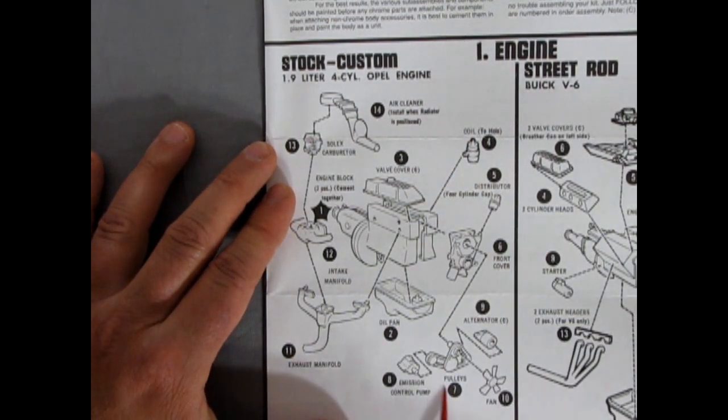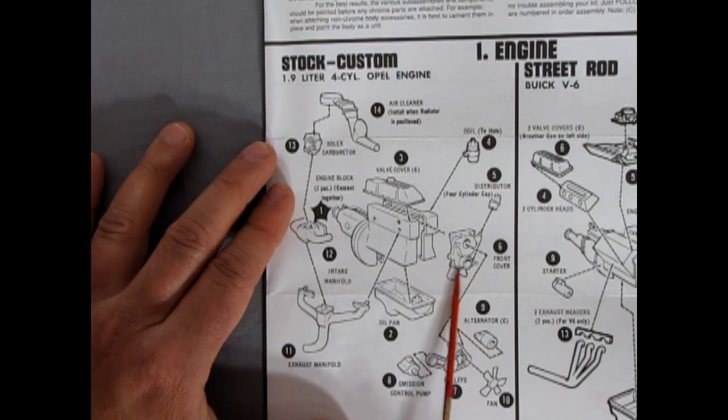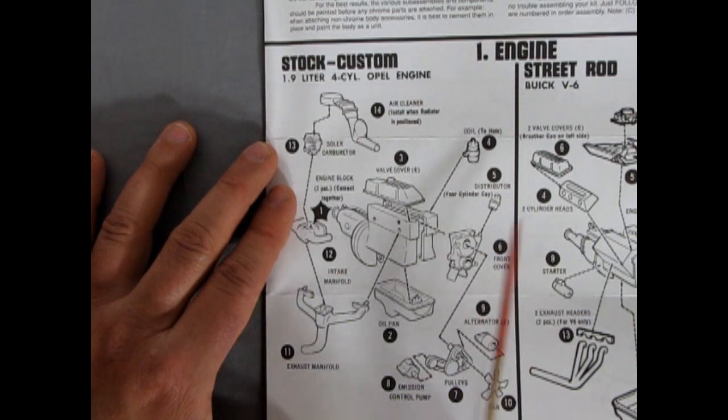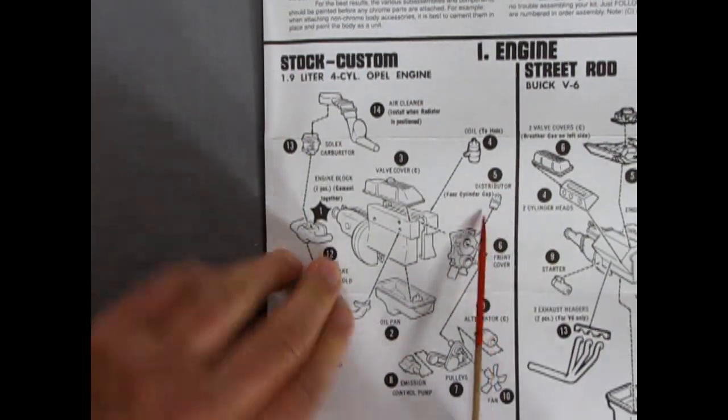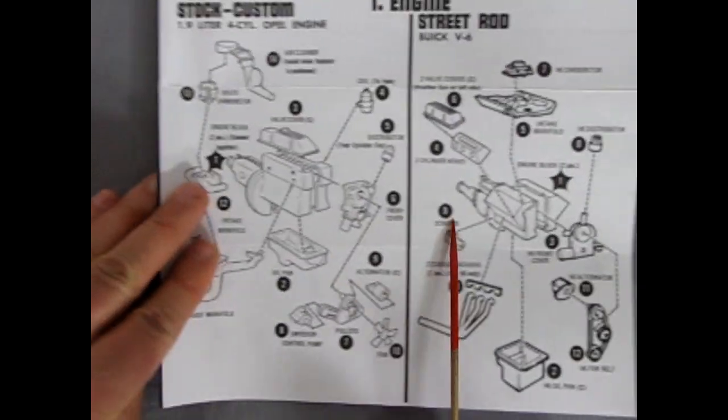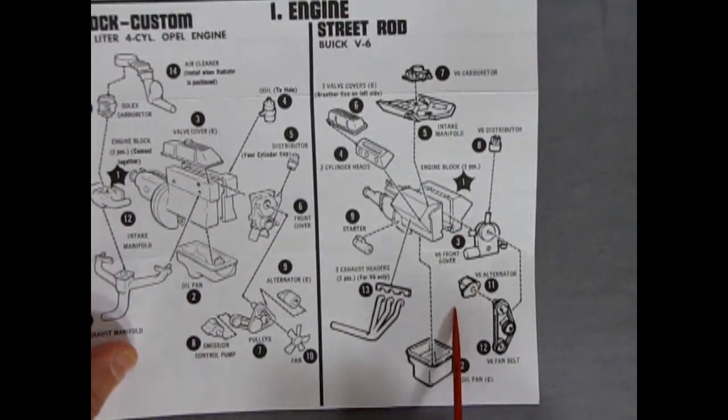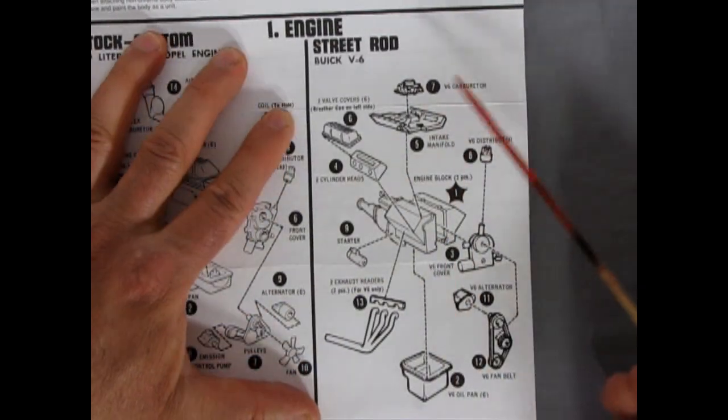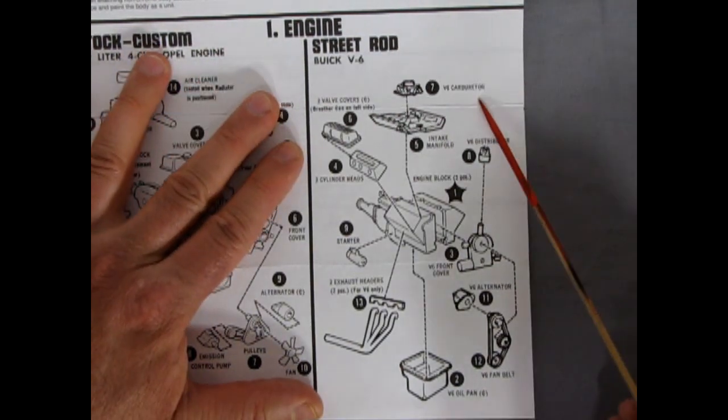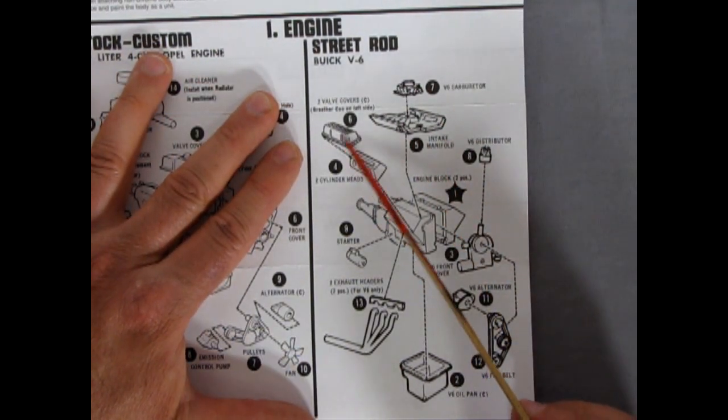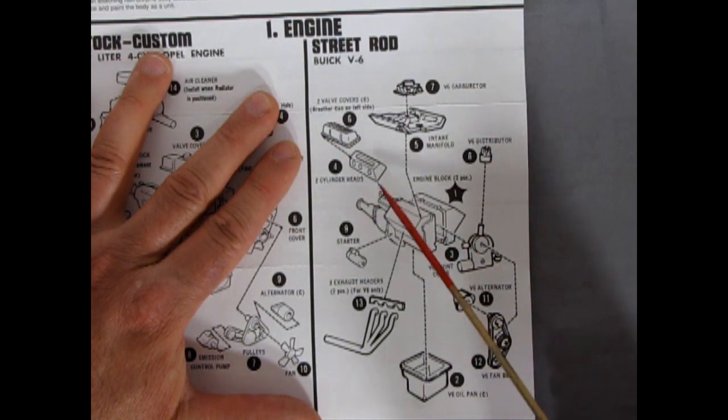Got this nice oil pan here. There's an emission control pump. Your pulleys. Your fan. Your alternator. The front cover for the engine. And of course the distributor. Four cylinder style cap. Then as we move over here. For our street rod. We do get the Buick V6 with a V6 carburetor. The intake manifold. Chrome valve covers on both sides.